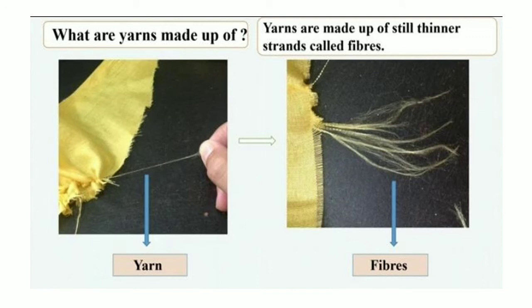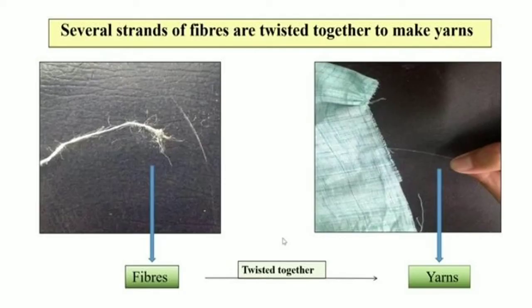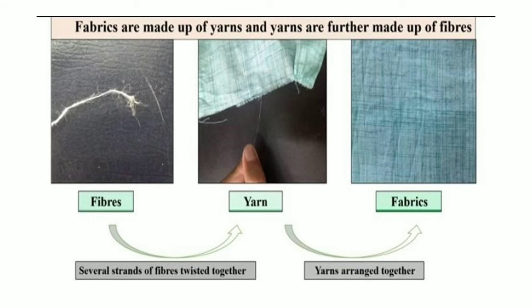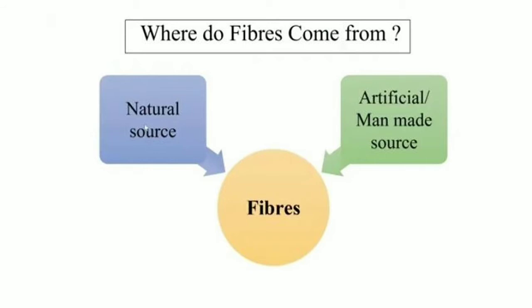Now what are yarns made up of? Yarns are made up of still thinner strands called fibers. When I pull out a thread-like structure from the cloth, these thread-like structures are nothing but fibers, and these fibers together form a substance called yarn. Several strands of fibers are twisted together to make yarns. Fabrics are made up of yarns and yarns are further made up of fibers — several strands of fibers are twisted together to form yarns, and these yarns are then arranged together to form a fabric. These fibers are mainly coming from two sources: natural sources and artificial or man-made sources.